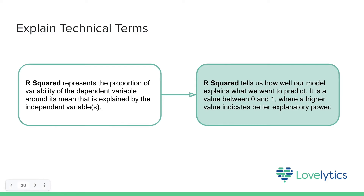Here are some examples of how you can explain technical terms. A technical explanation of R-squared would be that it represents the proportion of variability of the dependent variable around its mean that is explained by the independent variables. However, for users not familiar with this, you can explain it more simply: R-squared tells us how well our model explains what we want to predict. It is a value between 0 and 1, where a higher value indicates better explanatory power — highlighting for the non-technical audience what value is good and what is bad.